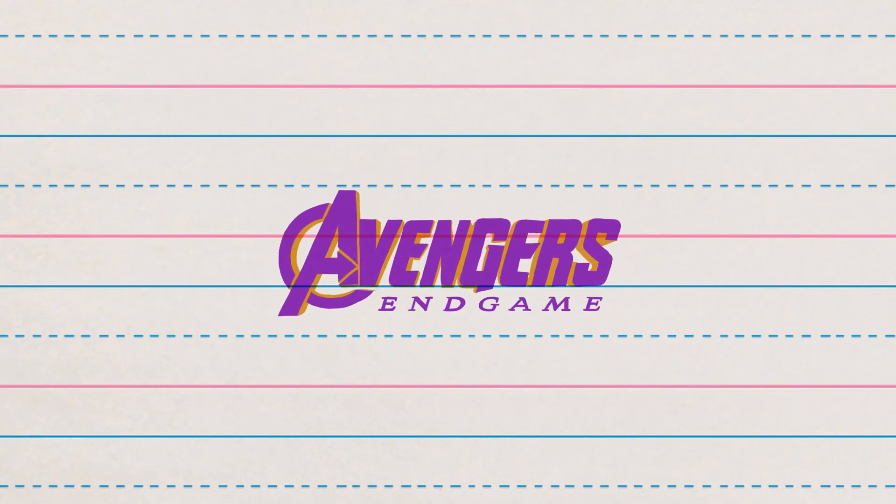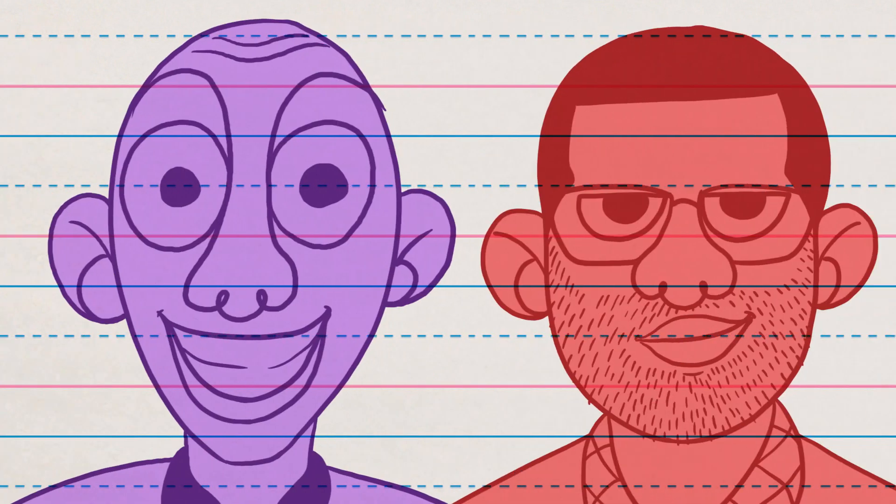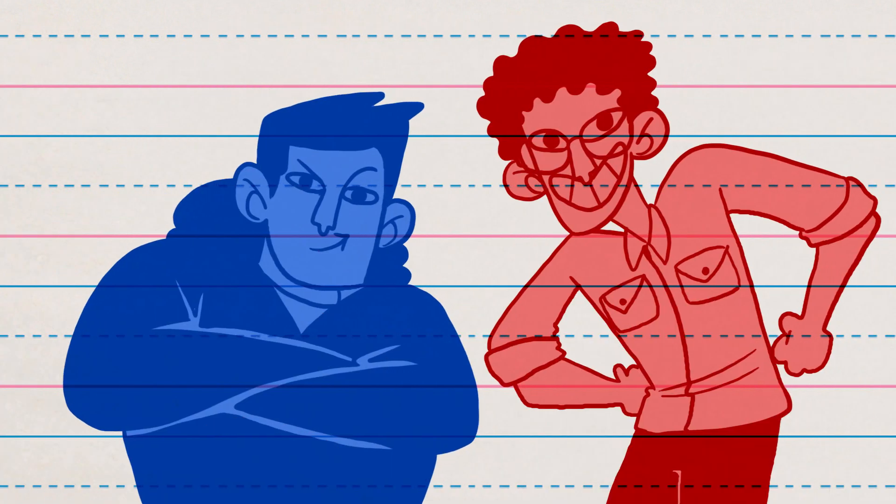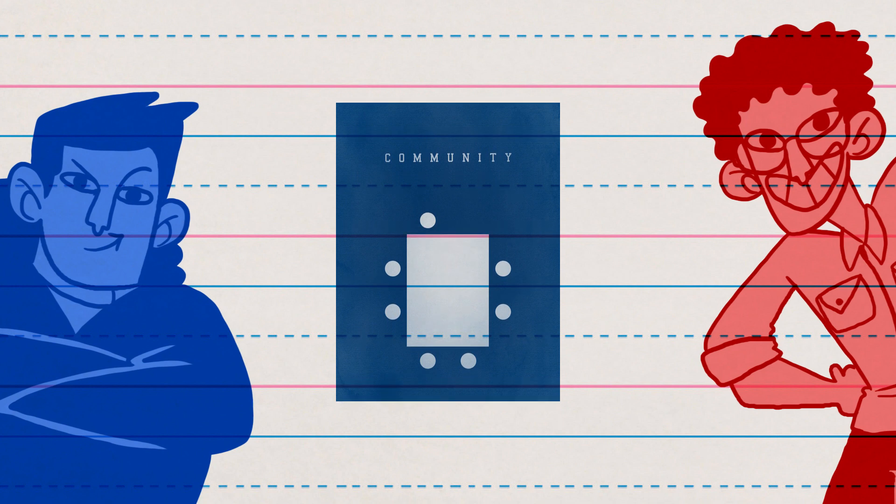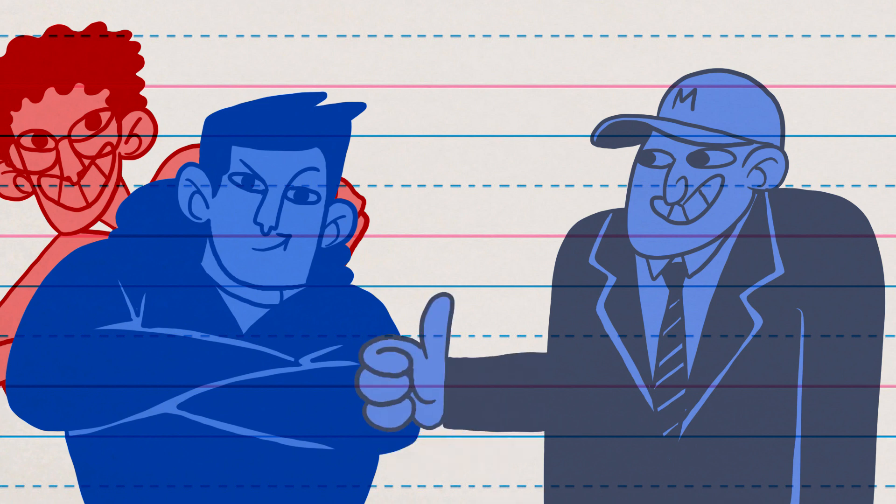Avengers Endgame was directed by Marvel veterans The Russos who basically look like White Key and Peele. The Russos started off with TV shows like Community and managed to dump so much action into a situational comedy that Marvel was just like, do you just want to do all our movies?